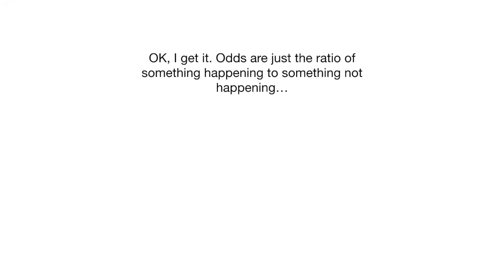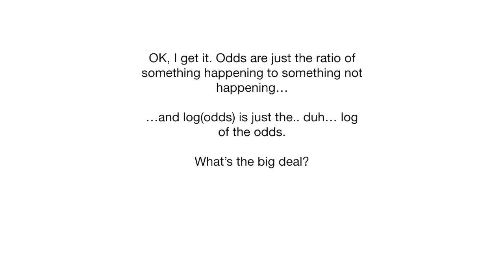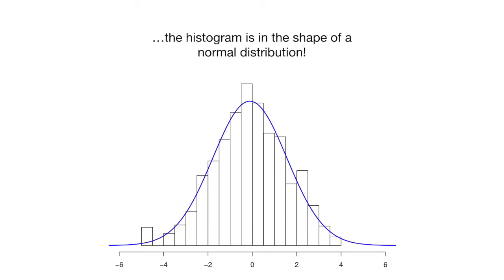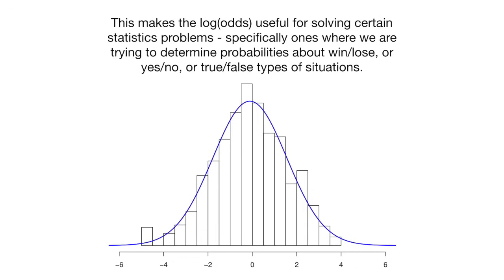Odds are just the ratio of something happening to something not happening. And the log of the odds is just the log of the odds. To show you what the big deal is, if I pick pairs of random numbers that add up to 100 and use them to calculate the log of the odds and draw a histogram, the histogram is in the shape of a normal distribution. This makes the log of the odds useful for solving certain statistics problems, specifically ones where we are trying to determine probabilities about win or lose, or yes or no, or true or false type situations.